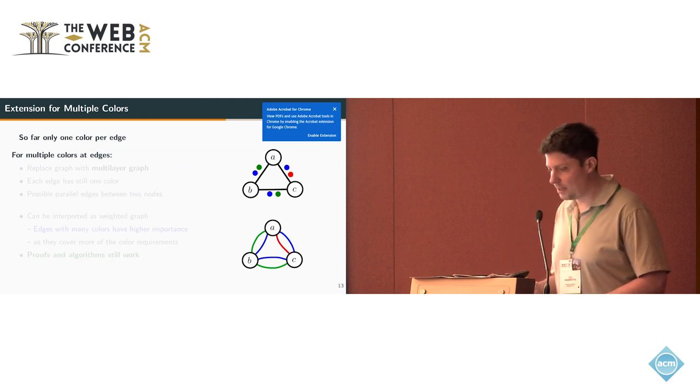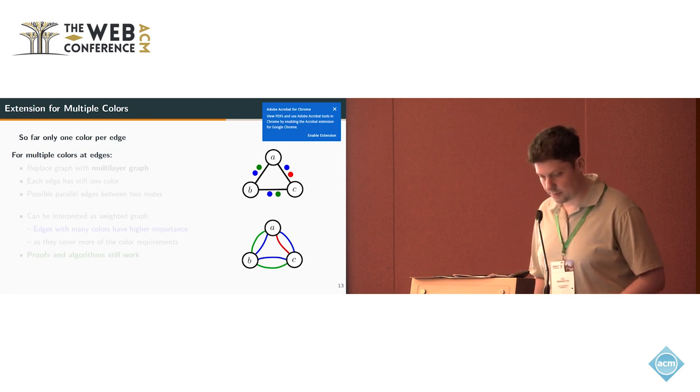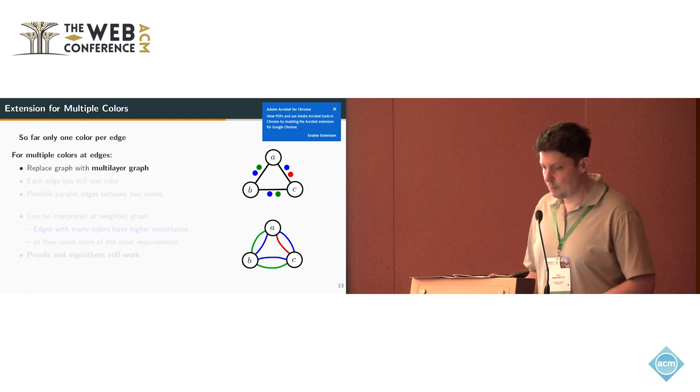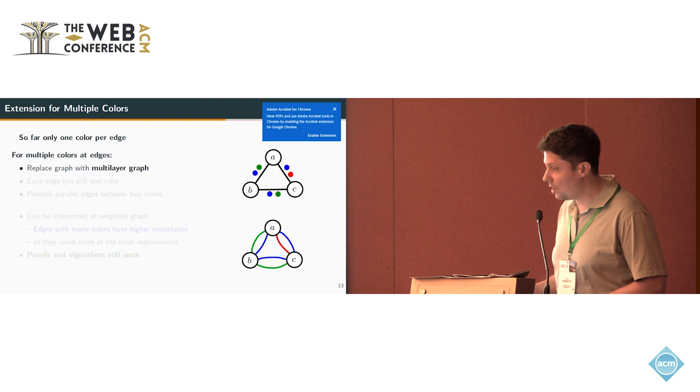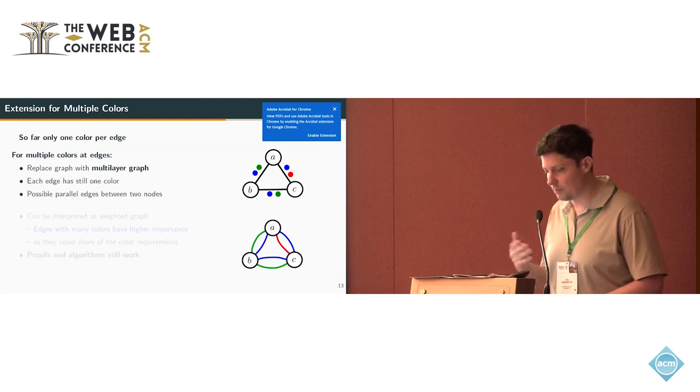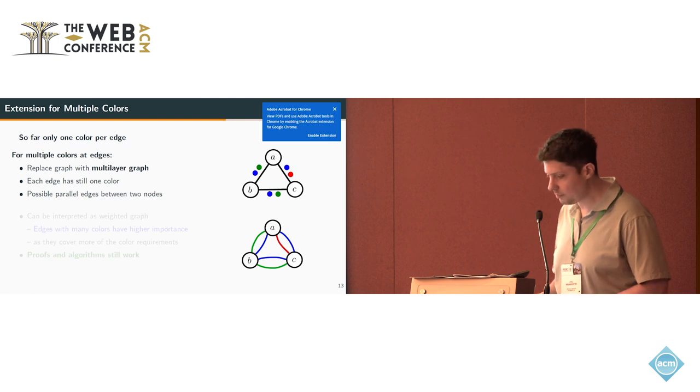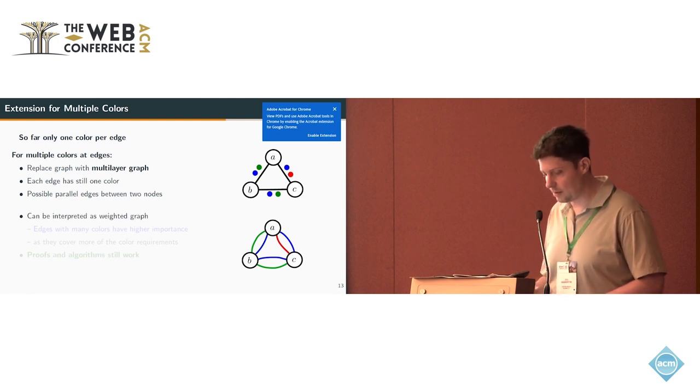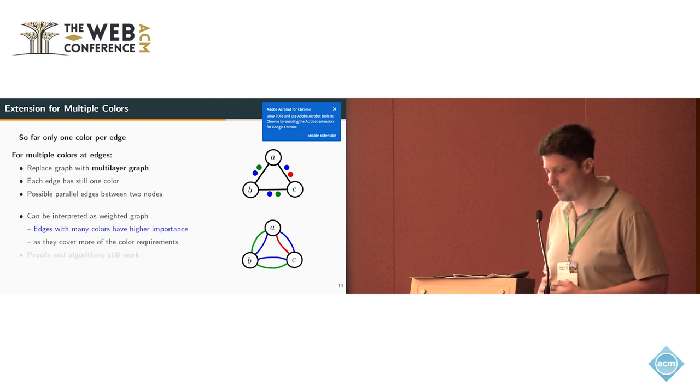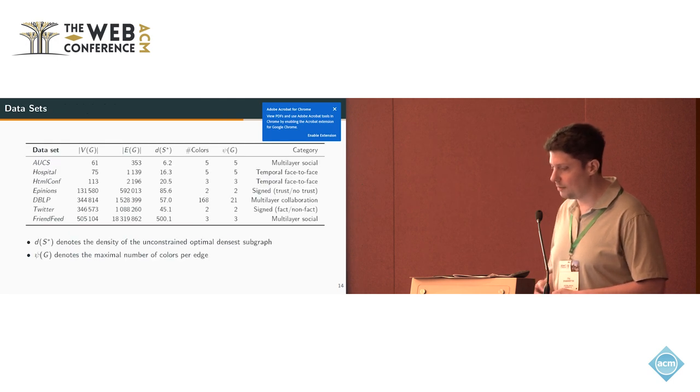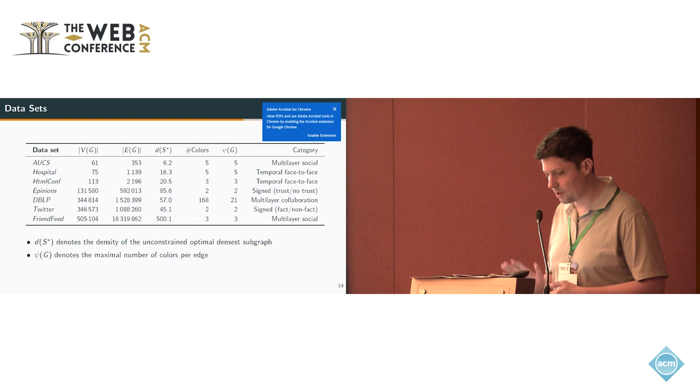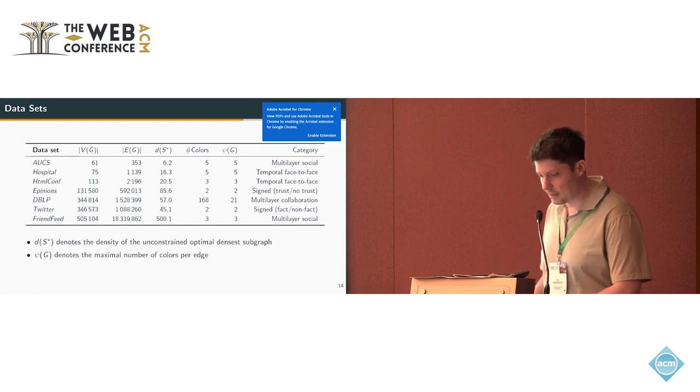So far we only had one color per edge, but if you remember, we assign possibly sets of colors to the edges. Instead of having one edge with multiple colors, we replace this with multiple edges of different colors, as you see on the right. This can also be interpreted as a weight - edges with many colors have a higher importance because they cover more color requirements. Our proofs and algorithms still work for the weighted case, so we can directly apply this.